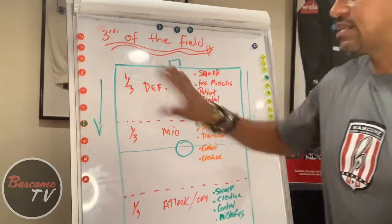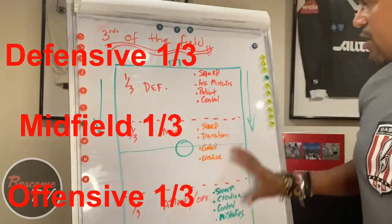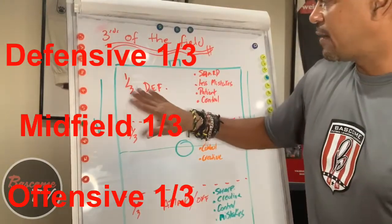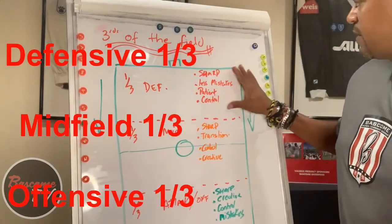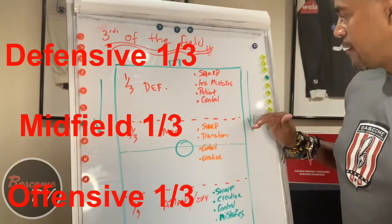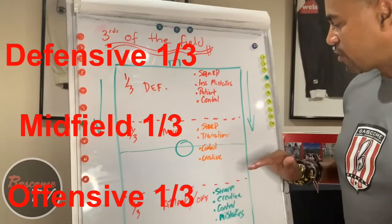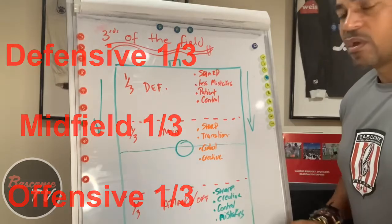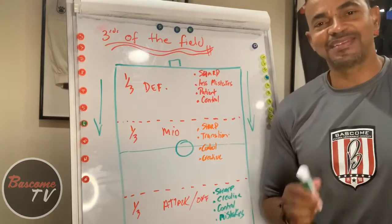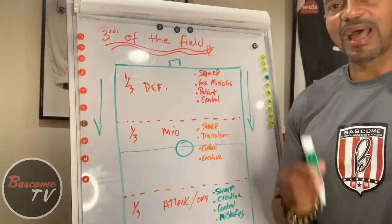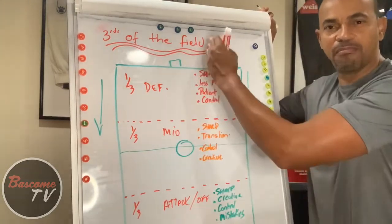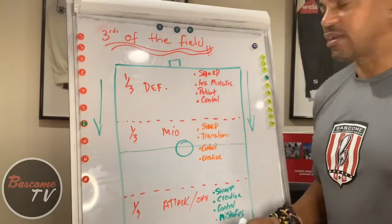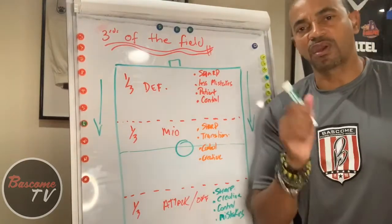So that's the thirds of the field. Write it down, draw it up, rewind the video if you need to. You've got: defensive third — sharp, less mistakes, patient, under control; midfield third — sharp, transition area, under control, be creative; attacking third — sharp, be creative, take chances, and understand you're going to make mistakes. That's it! Our next session we're going to talk about balancing the field, and after that we'll cover positioning and the moments of the game. Thank you, and I look forward to working with you next time.